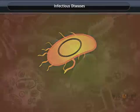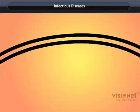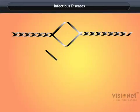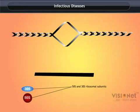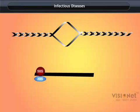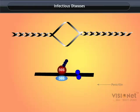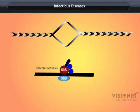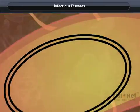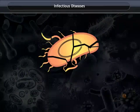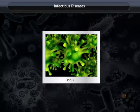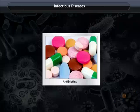Let us understand the mechanism of action of an antibiotic. These antibiotics act on biochemical pathways. Bacteria have a cell wall for protection. The antibiotic penicillin blocks the bacterial processes that build the cell wall. As a result, the growing bacteria become unable to make the cell walls and die easily. Viruses do not use these pathways at all, and that is the reason why antibiotics do not work against viral infections.